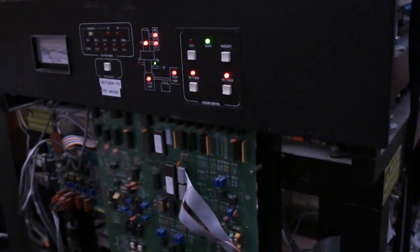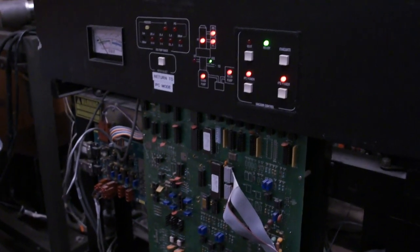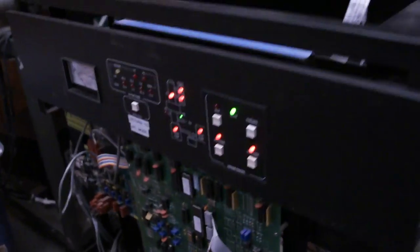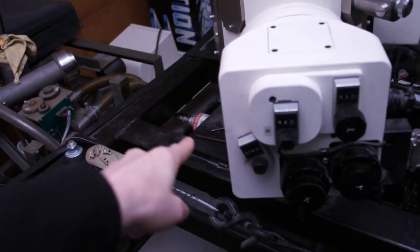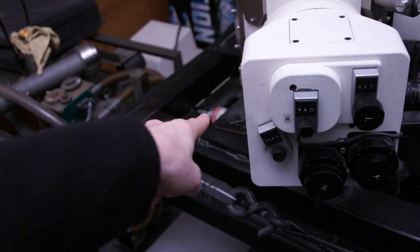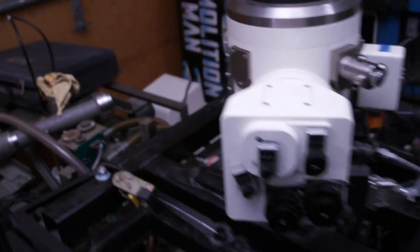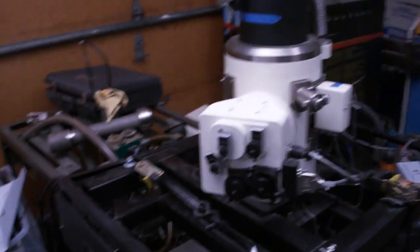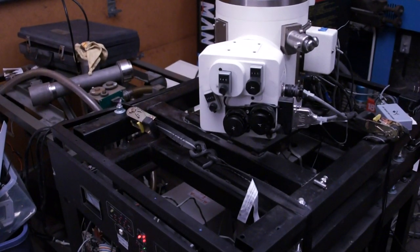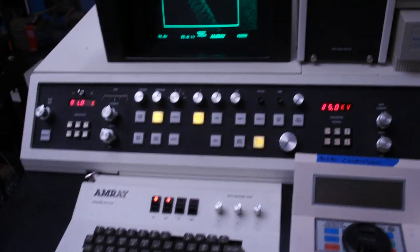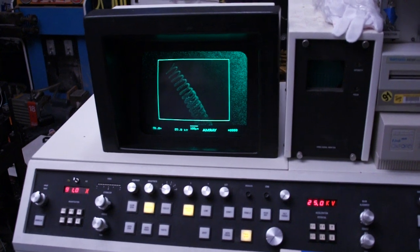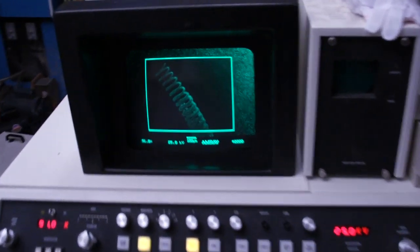Once it gets to a low enough vacuum, then it switches over to another vacuum gauge. You can actually see it here. This is like a triode vacuum tube, and you can use that to measure down to 10 to the minus 6 torr. And then once you reach the proper pressures, it will indicate to open the gate valve, and then you can start imaging.